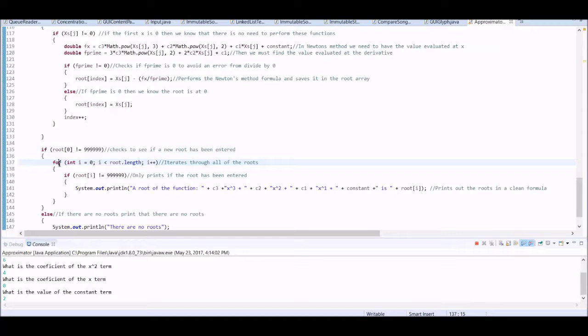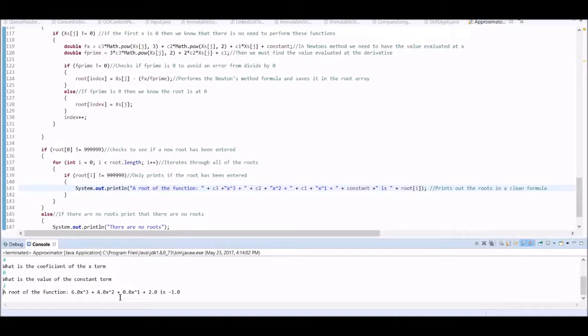We go here, go through this loop which iterates through all the roots that we saved. And then in line 141, it will print them out in this easy to read format, as I will show you here.